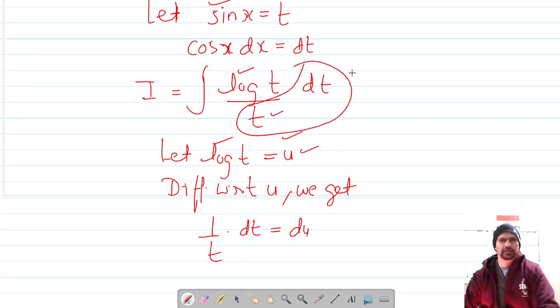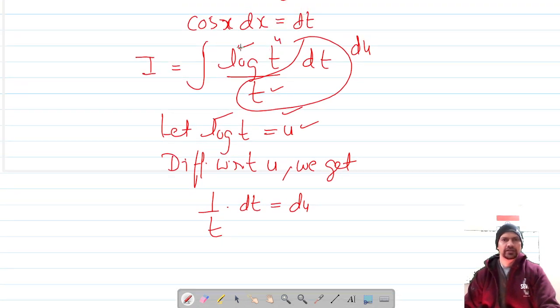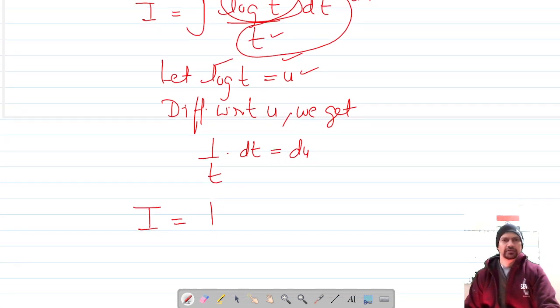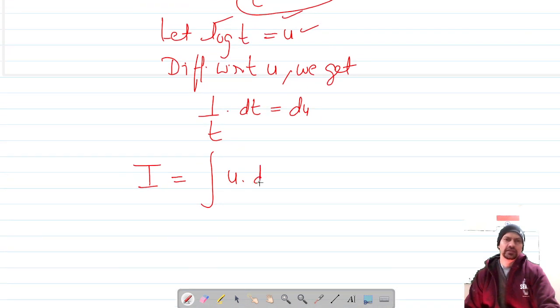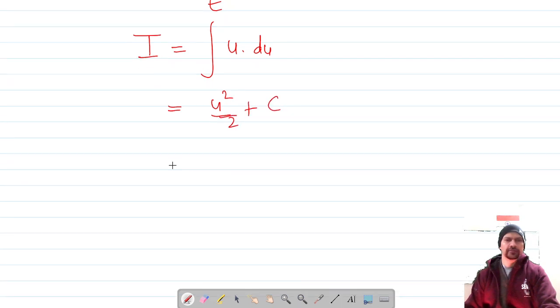Our integral in terms of u is u du, and now it's easy to integrate, which gives u²/2. Since u was substituted for log t, this becomes (log t)²/2.